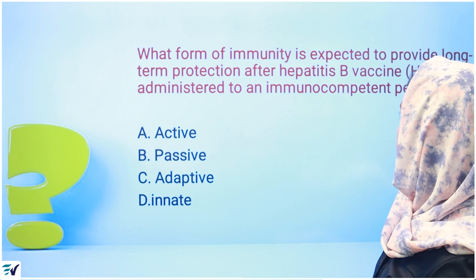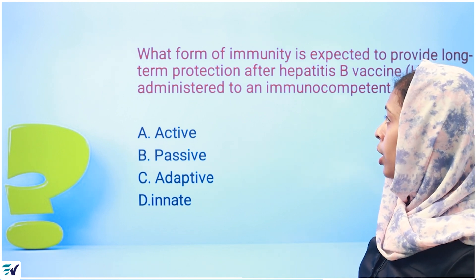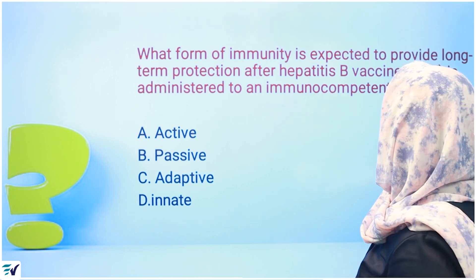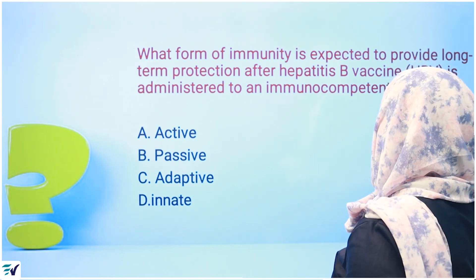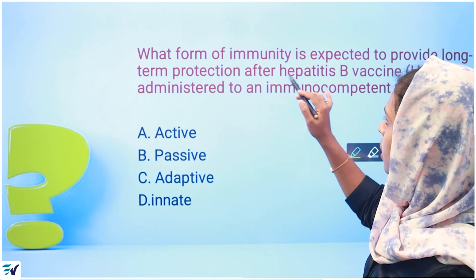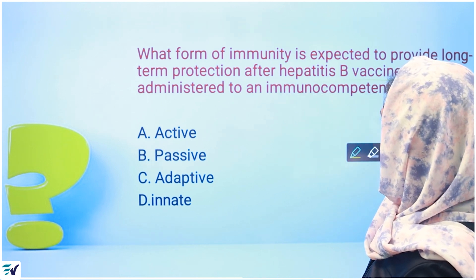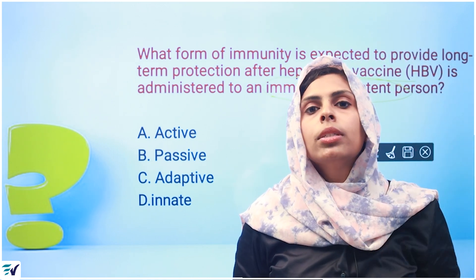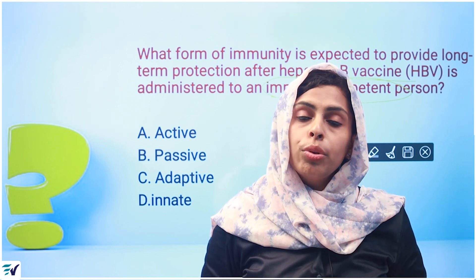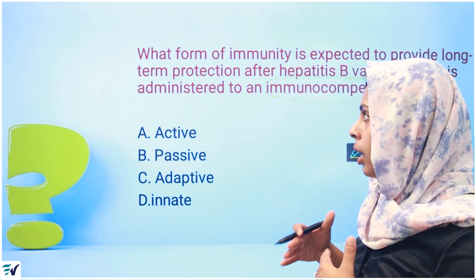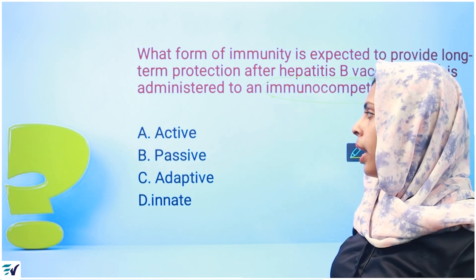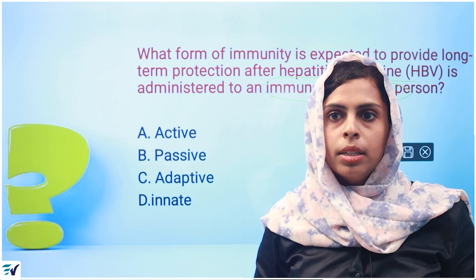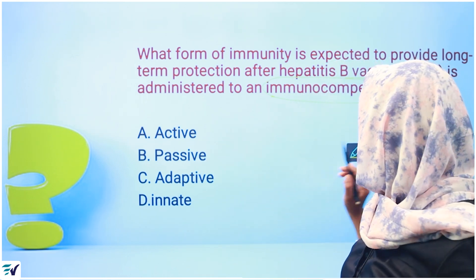Next question: what form of immunity is expected to provide long-term protection after hepatitis B vaccine is administered to an immunocompetent person? An immunocompetent person is a normal person. If we administer hepatitis B vaccination, they develop immunity. The answer is active immunity.